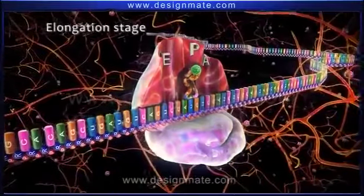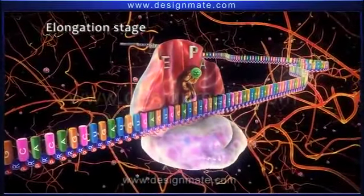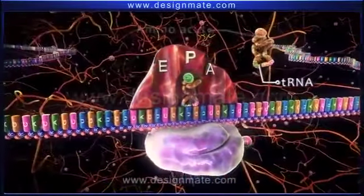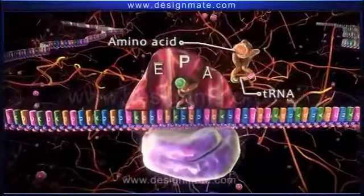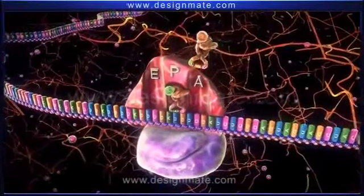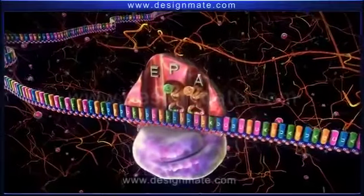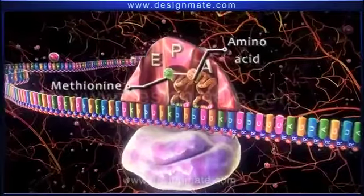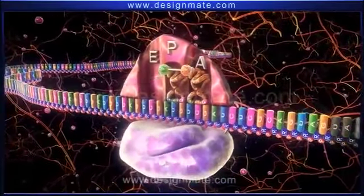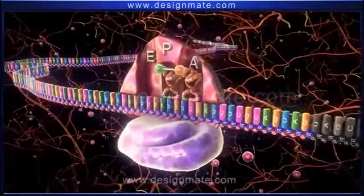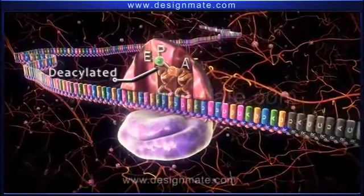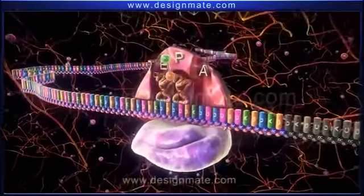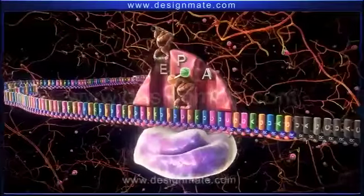This is followed by the elongation stage. During this stage, another tRNA carrying a molecule of an amino acid approaches the mRNA-ribosome complex and fits in the A site. Then a bond is formed between methionine and the amino acid molecule on the tRNA. As a result, Met-tRNA becomes deacylated. The ribosome then advances a distance of one codon, and the deacylated tRNA shifts to the E site, from where it dissociates.